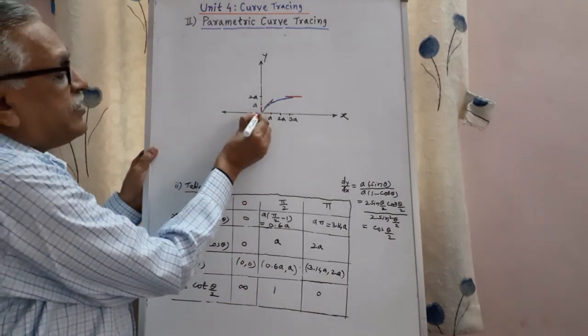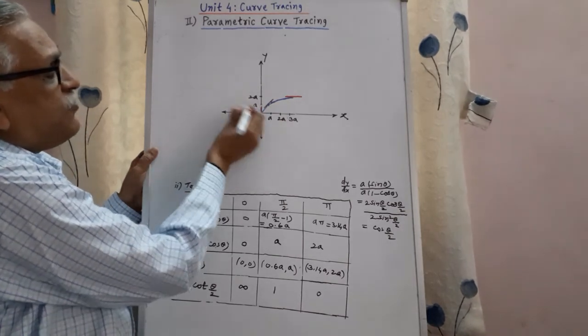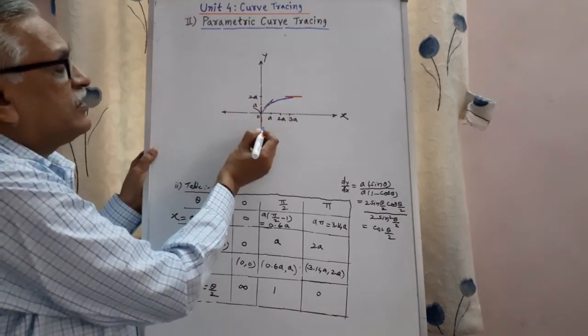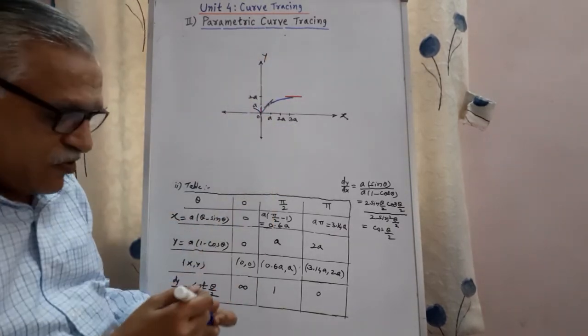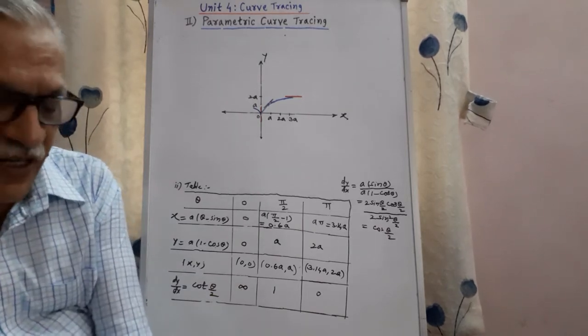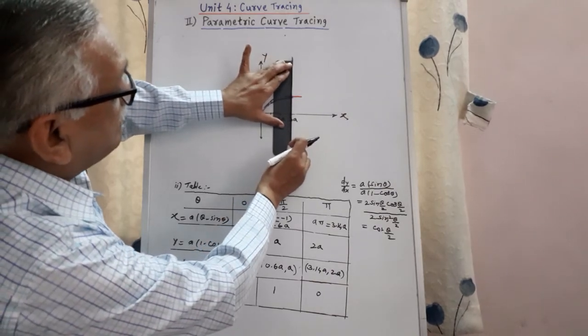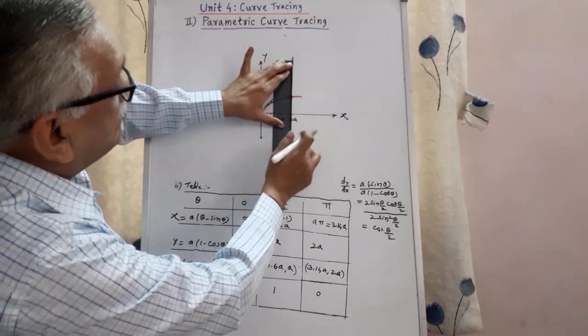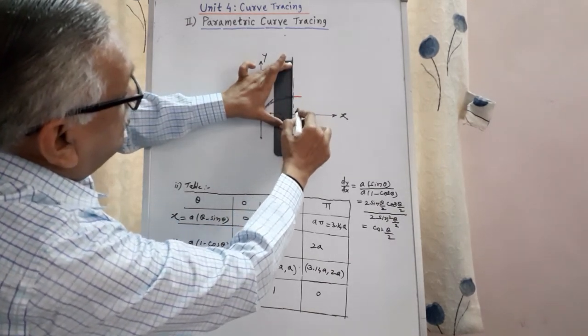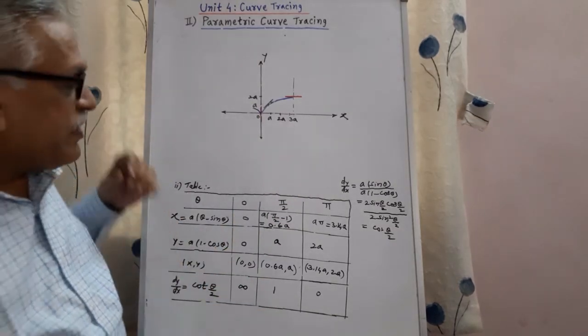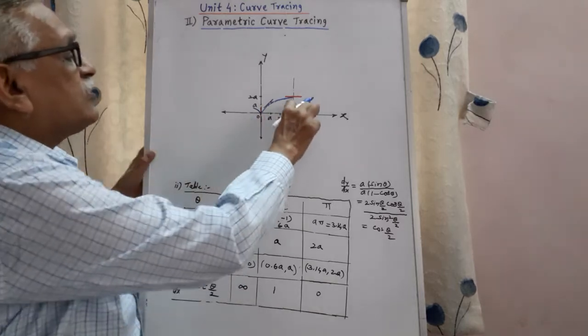Symmetrical about y-axis, therefore we can extend on this side. But don't make this type of curve, it is not giving a complete cycle. Therefore as the curve is symmetrical about y-axis, it is symmetrical to the line parallel to y-axis, we make a curve which is symmetrical to this y-axis.